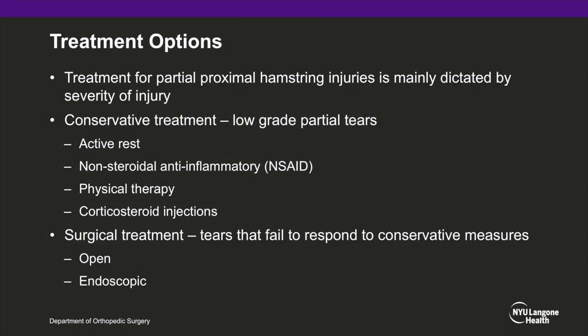Treatment for partial proximal hamstring injuries is mainly dictated by the severity of the injury. There are two main treatment options: conservative and surgical. Conservative treatment is typically employed for low-grade partial tears and encompasses active rest, NSAIDs, physical therapy, and possible corticosteroid injections.